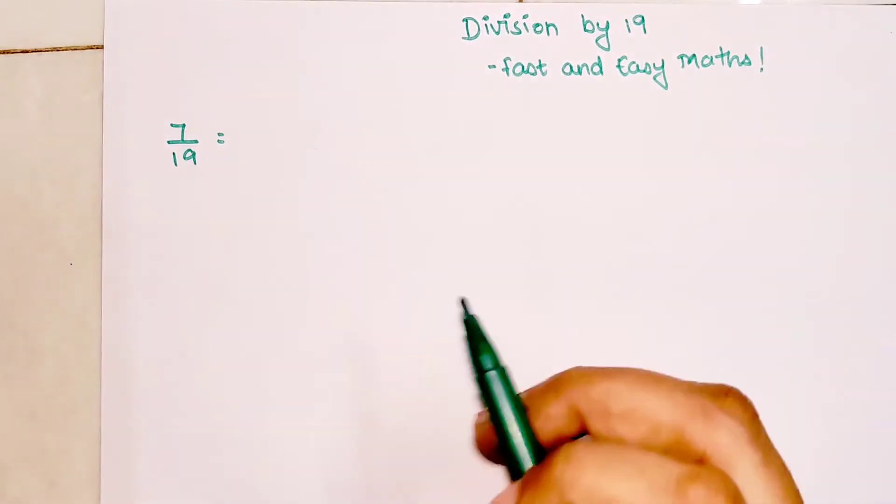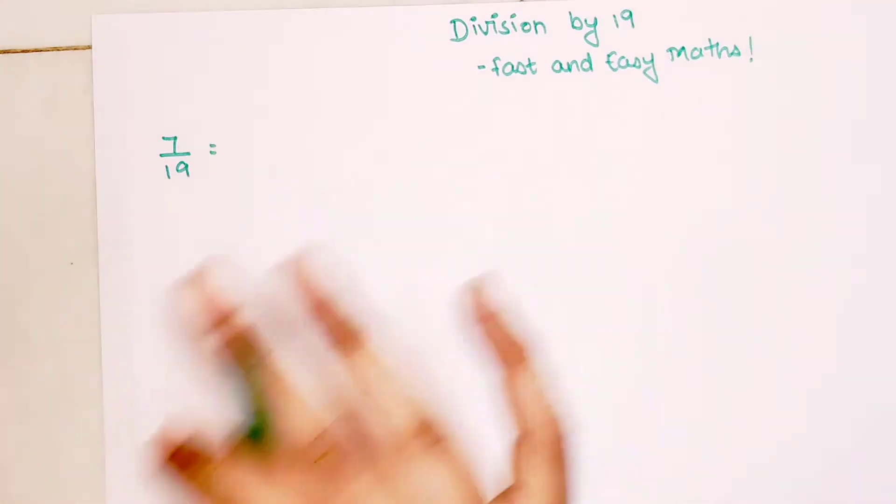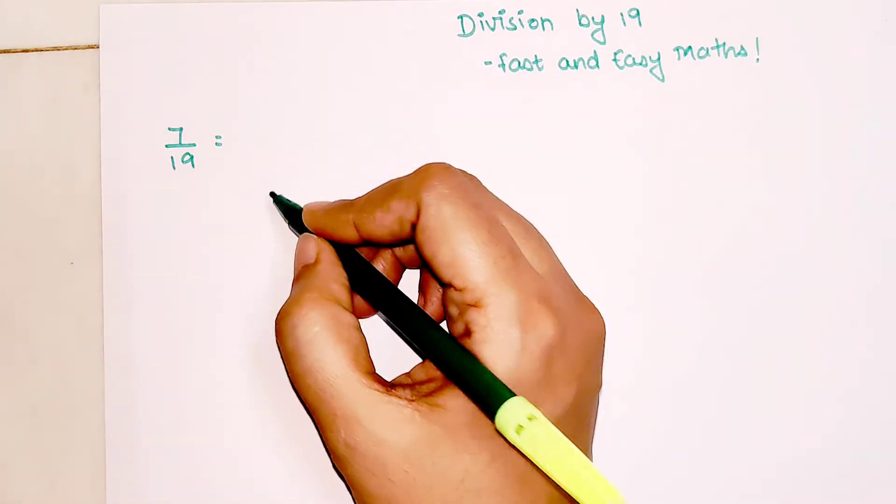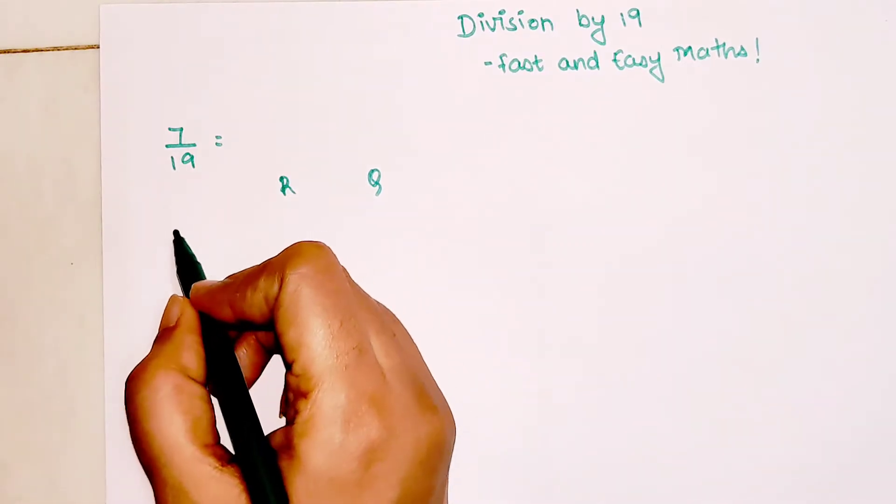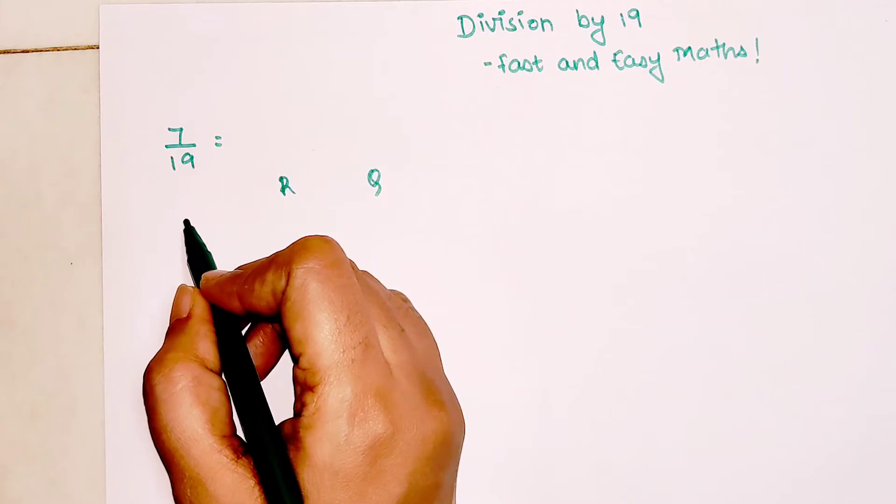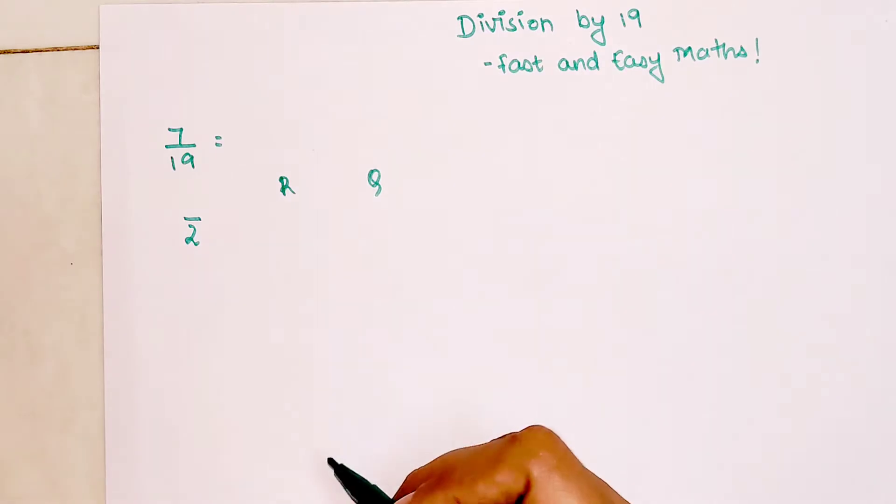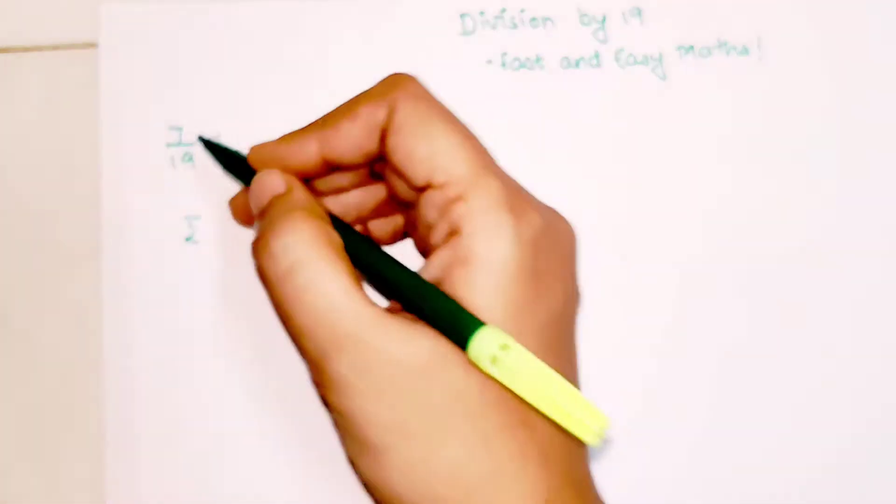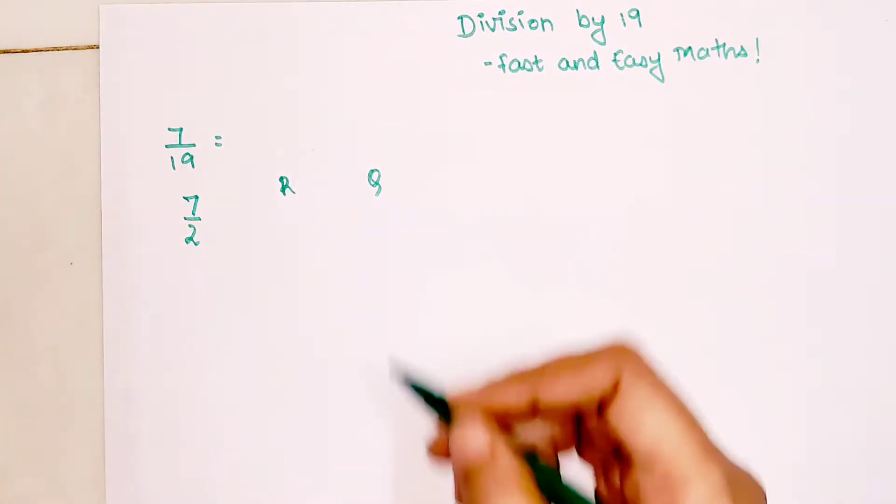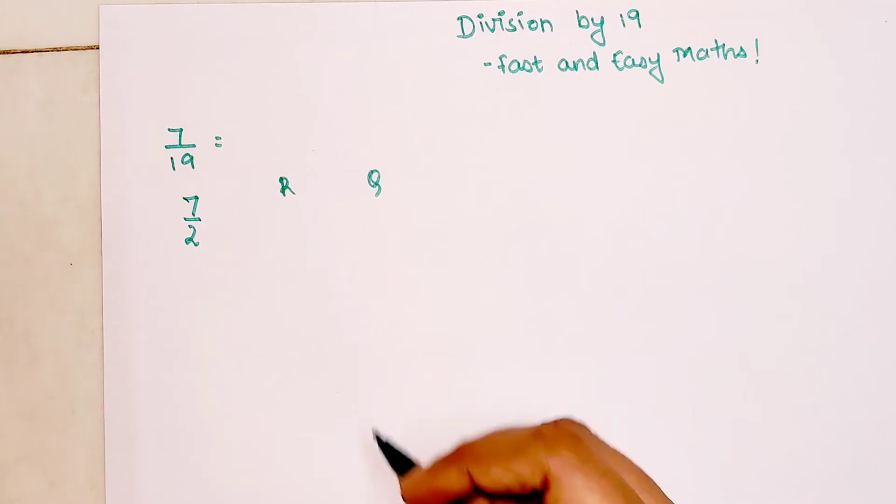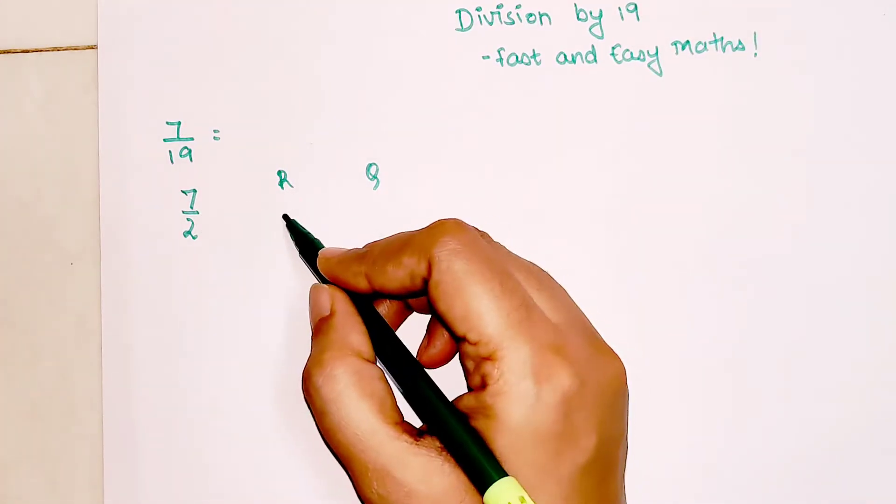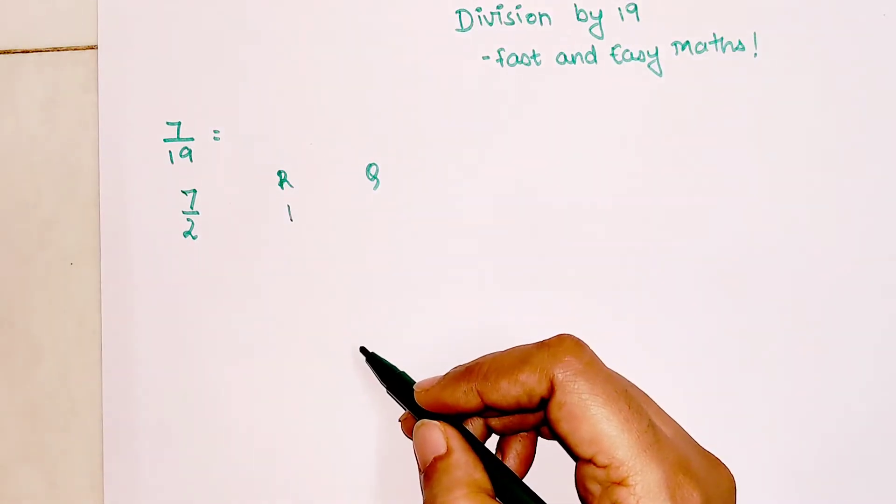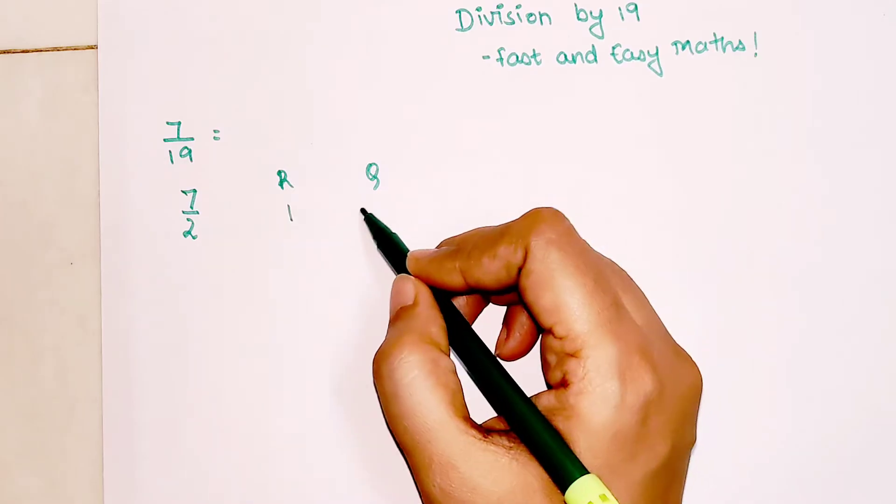This trick is superb. Trust me, you don't have to do the long division method. Basically, any number you get is going to be divided by 2, and you will start with your numerator. When you divide 7 by 2, since it's an odd number, the remainder will always be 1 and the quotient will be 3.